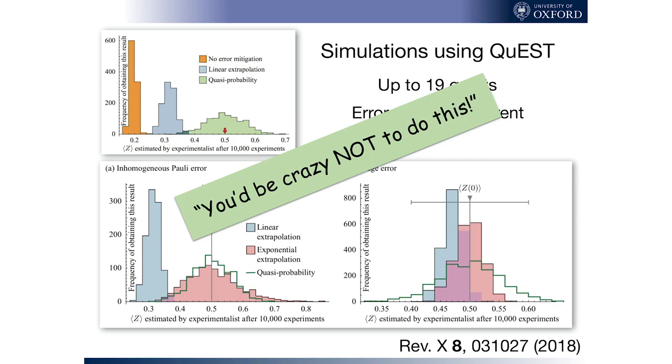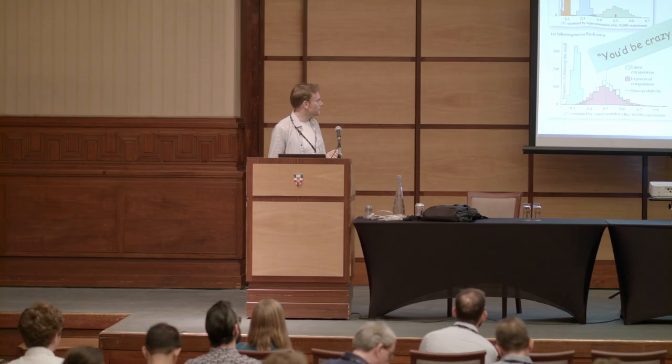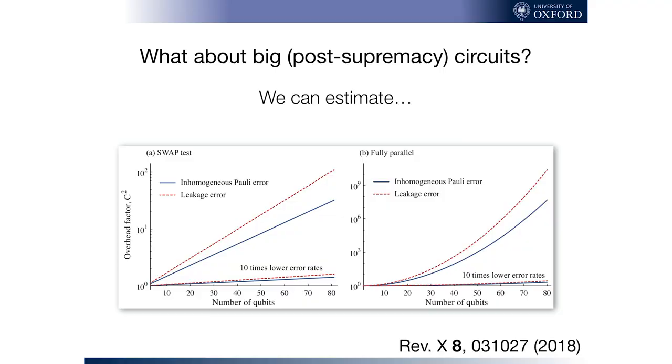And in these diagrams, we're comparing the same number of runs on your device. So it's clearly better to be sampling from this distribution, if the real answer is 0.5, than this completely inaccurate distribution. So there's no downside to doing this, except that it's not a silver bullet.